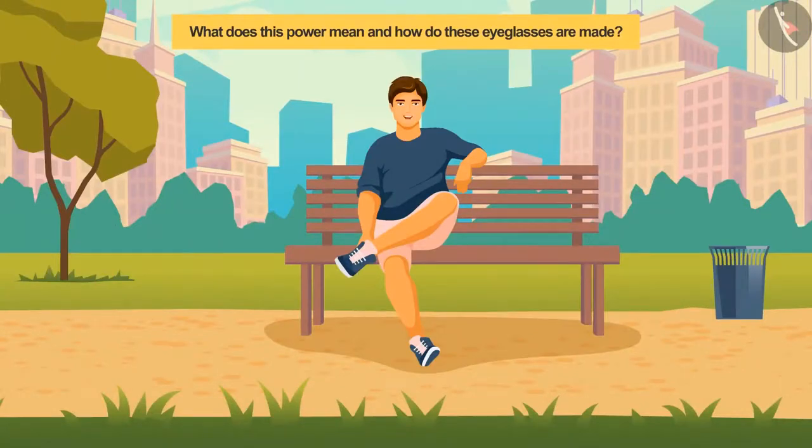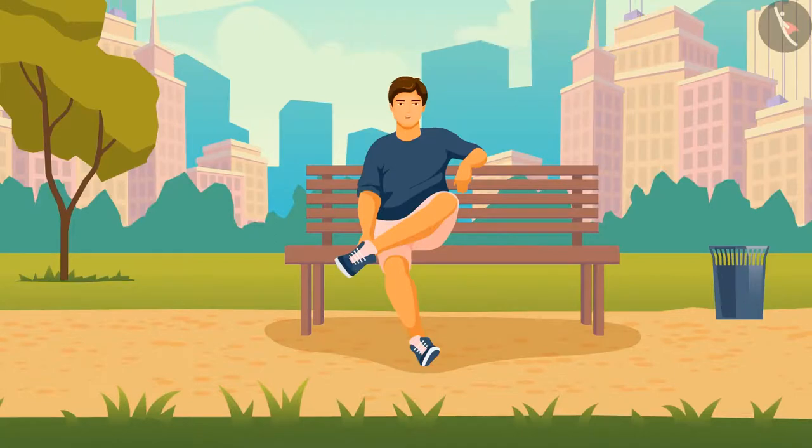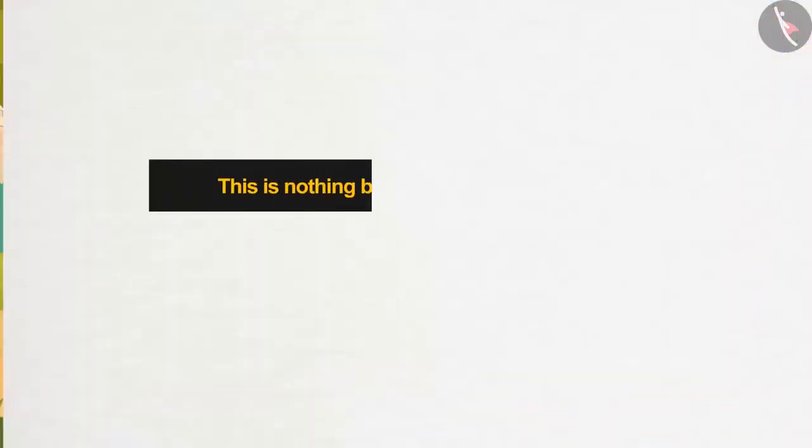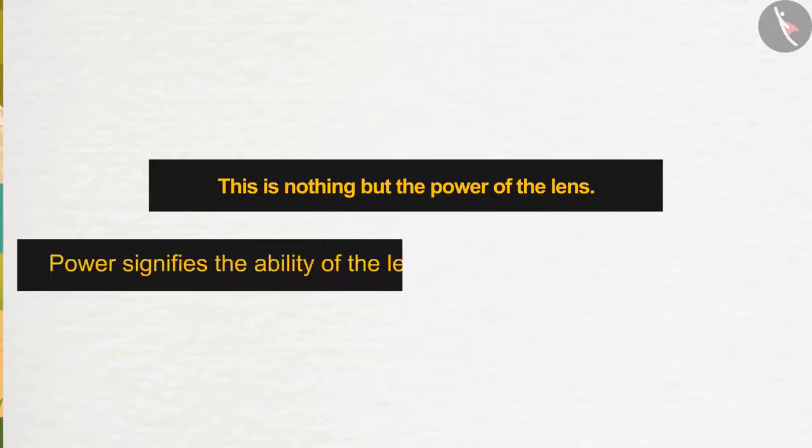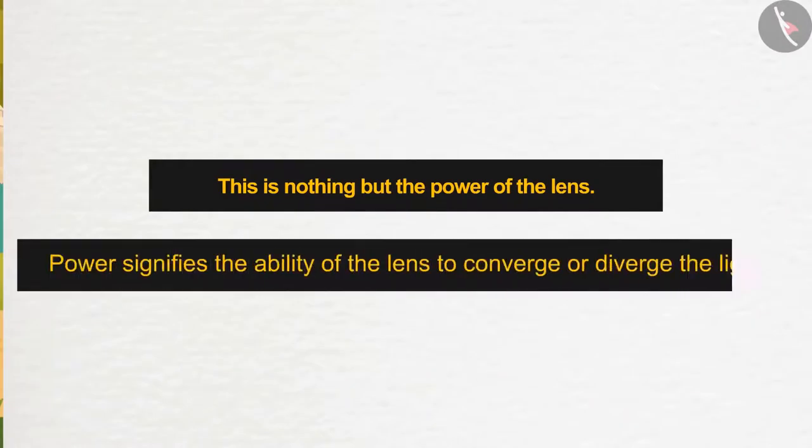This is nothing but the power of the lens. This power signifies the ability of the lens to converge or diverge the light. It can be represented mathematically as the reciprocal of the focal length.